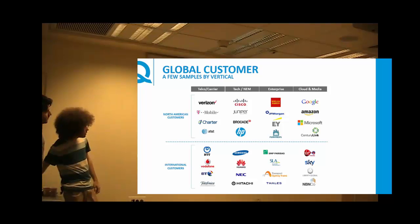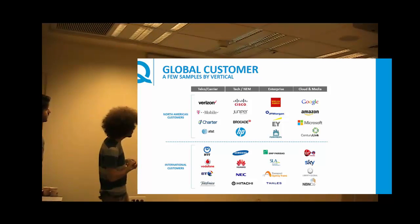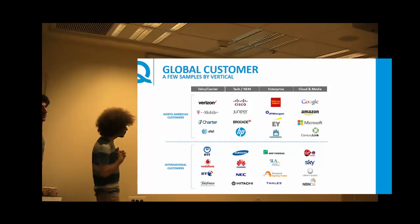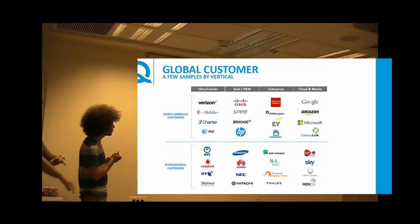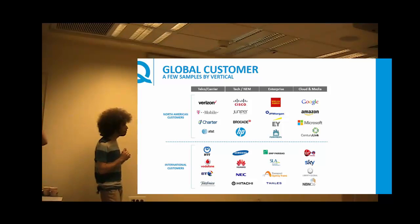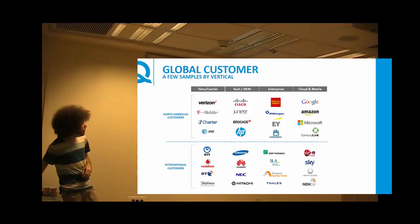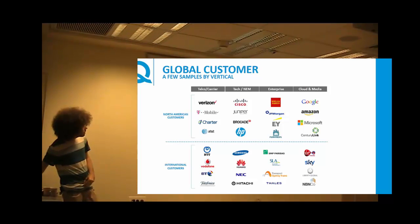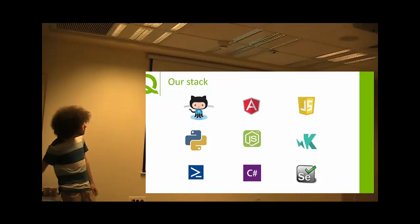A few words about our customers — most of them are really big software or hardware companies. Deployments are really heavy. The average customer will upgrade maybe once a year or every two years. We are releasing every three or four months. Our tech stack includes Python, C#, PowerShell, and Selenium/Karma — the common ones.